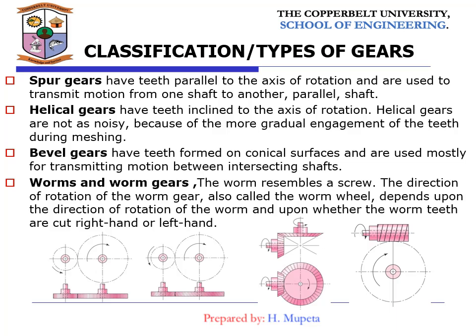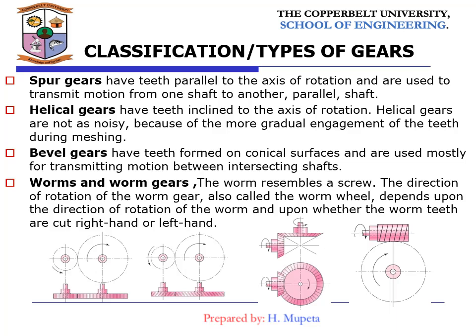Helical gears have teeth cut at an angle to the axis of rotation. These helical gears are not noisy because of the more gradual engagement of the teeth during meshing. Then we have bevel gears, whose teeth are formed on conical surfaces, and they are most used for transmitting motion between intersecting shafts. Then we have worm and worm gears — the worm assembly is like a screw, and the direction of rotation of the worm gear will depend upon the direction of rotation of the worm and whether the worm teeth are cut right-hand or left-hand.